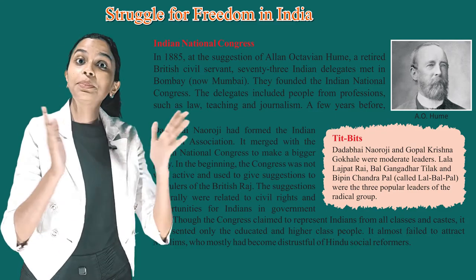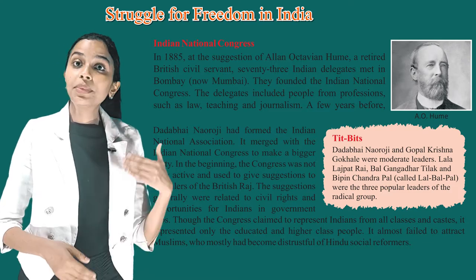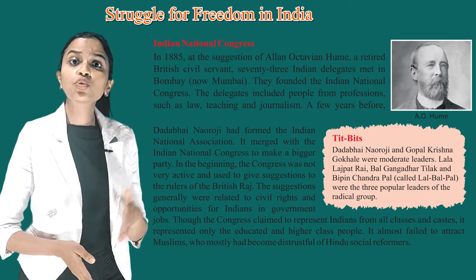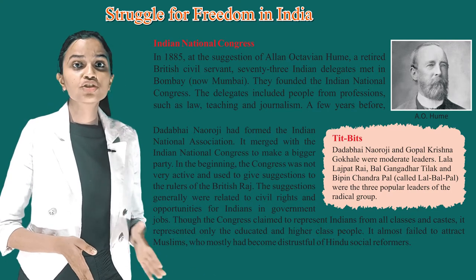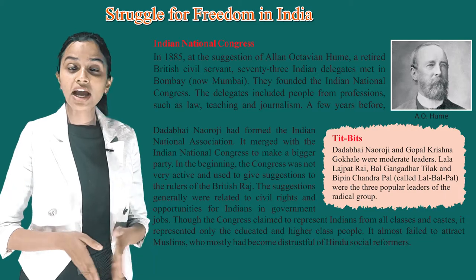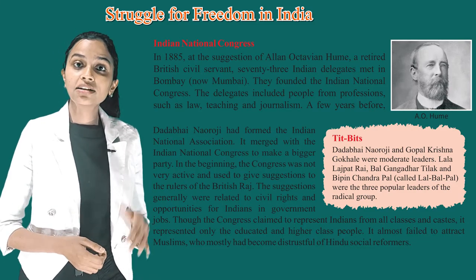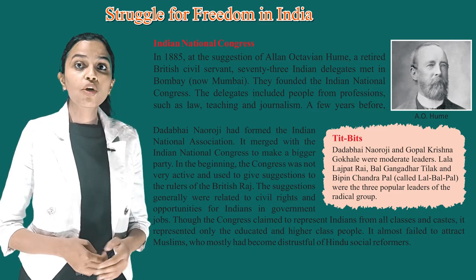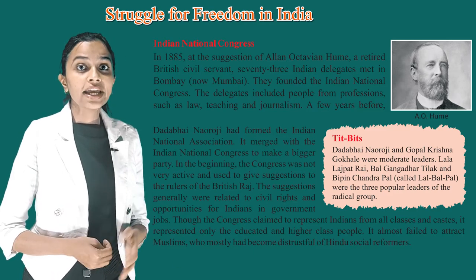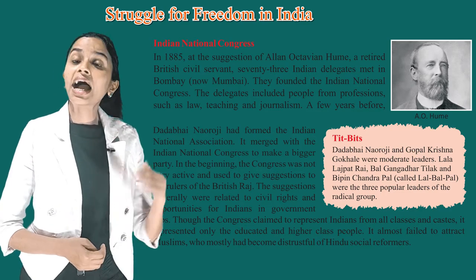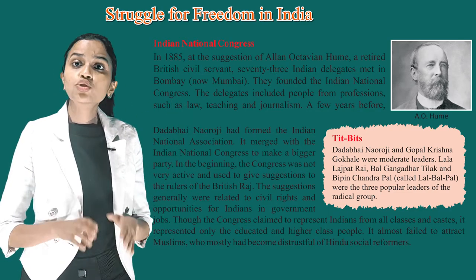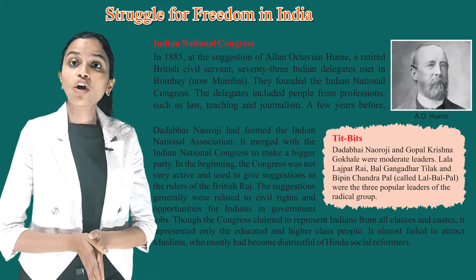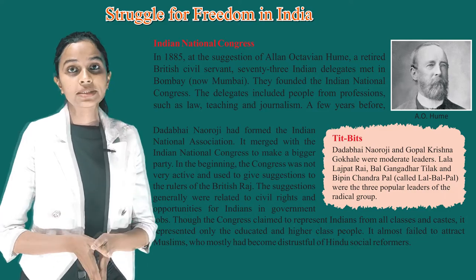In the beginning, the Congress was not very active and used to give suggestions to the rulers of the British Raj, generally related to civil rights and opportunities for Indians in government jobs. Though the Congress claimed to represent Indians from all classes and castes, it represented only the educated and higher class people, and almost failed to attract Muslims, who mostly had become distrustful of Hindu social reformers.